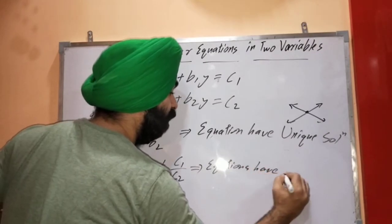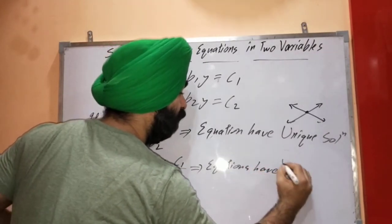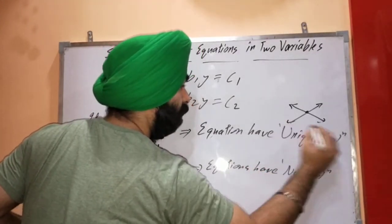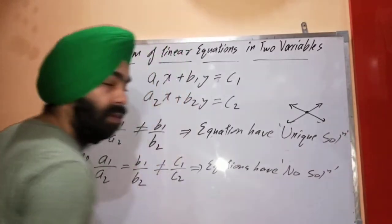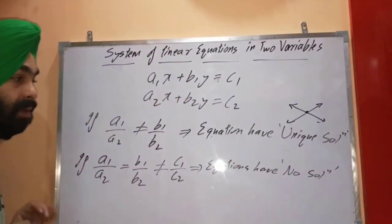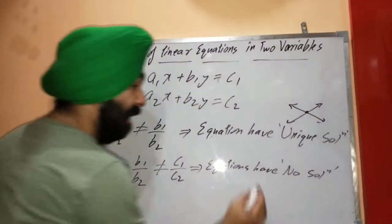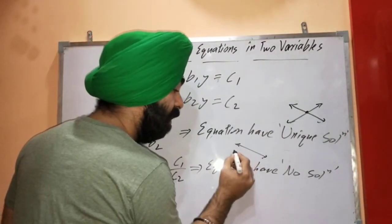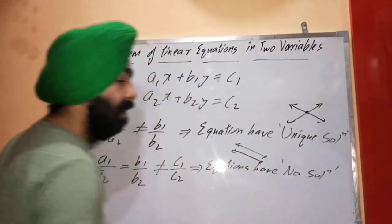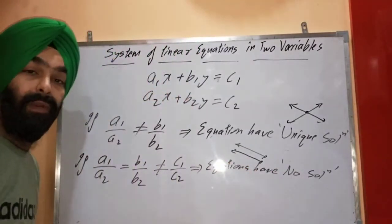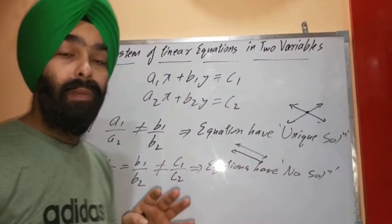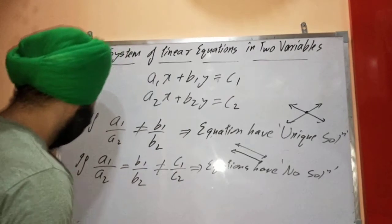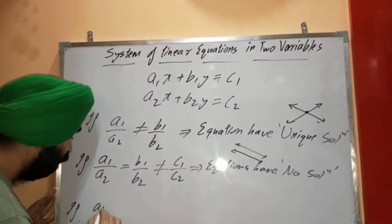The second case: if a1/a2 is equal to b1/b2 but not equal to c1/c2, then there is no solution. That means those lines will be parallel to each other — there will be no point of intersection.